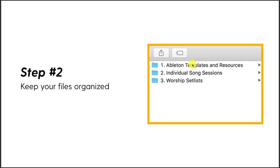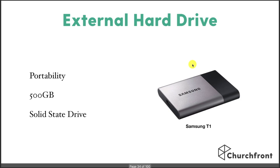Step two is keeping your files organized. This is really important and it's going to save you a lot of time. You're working with a lot of audio files — your backing track stems, all your MIDI cues, your templates, and all your Ableton Live projects built on a week-to-week basis. I recommend getting an external hard drive — I have a Samsung solid-state drive — with at least 500 gigabytes of space; that'll last you a long time.